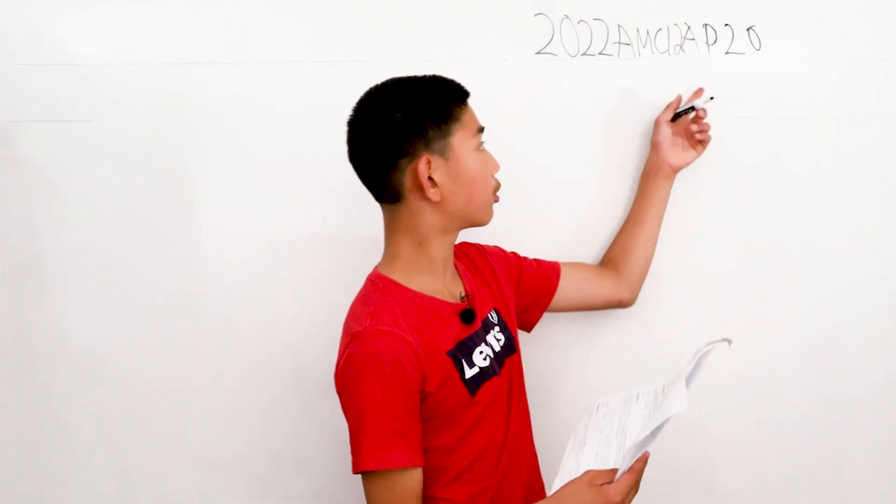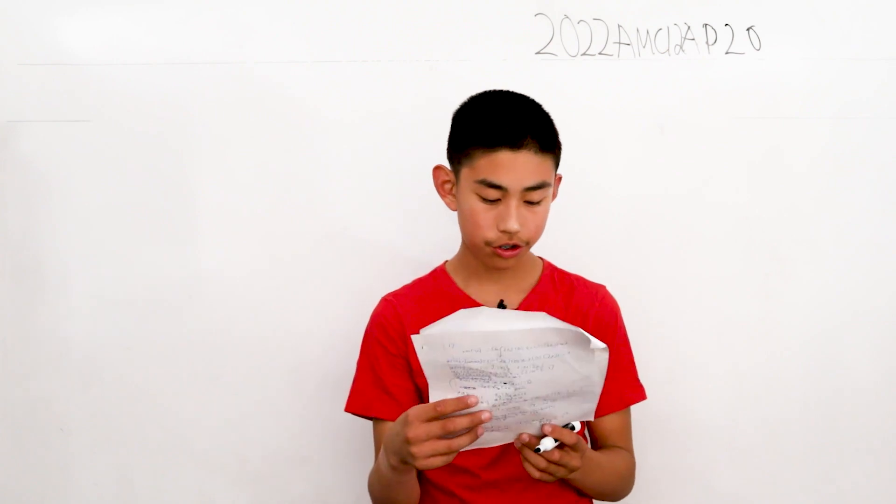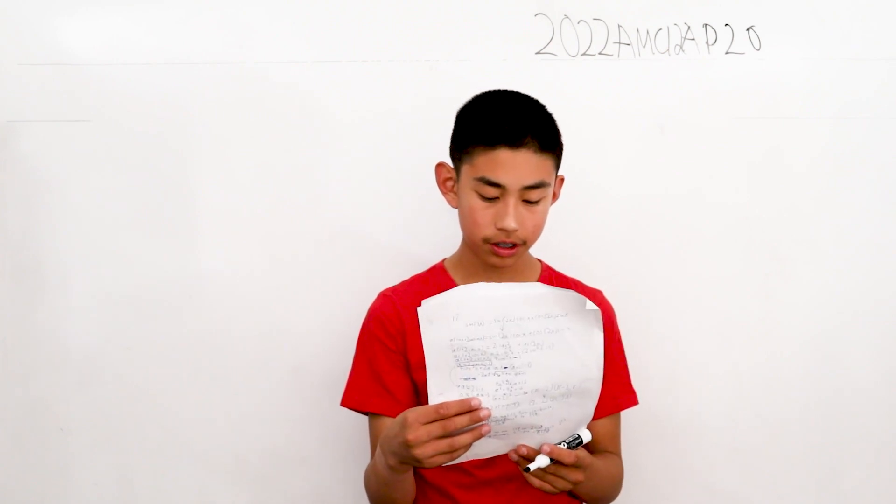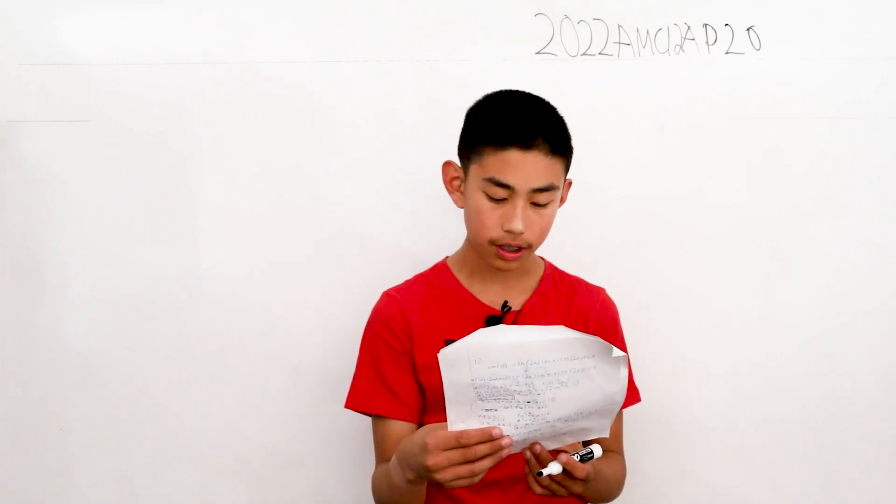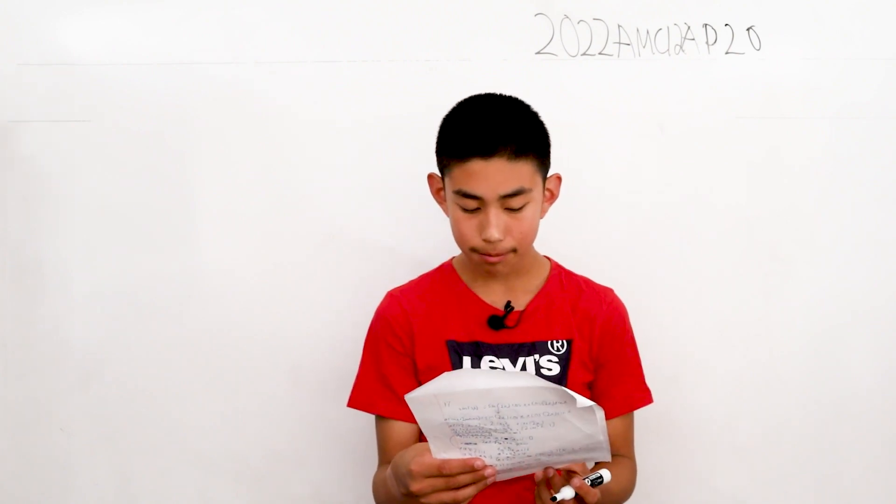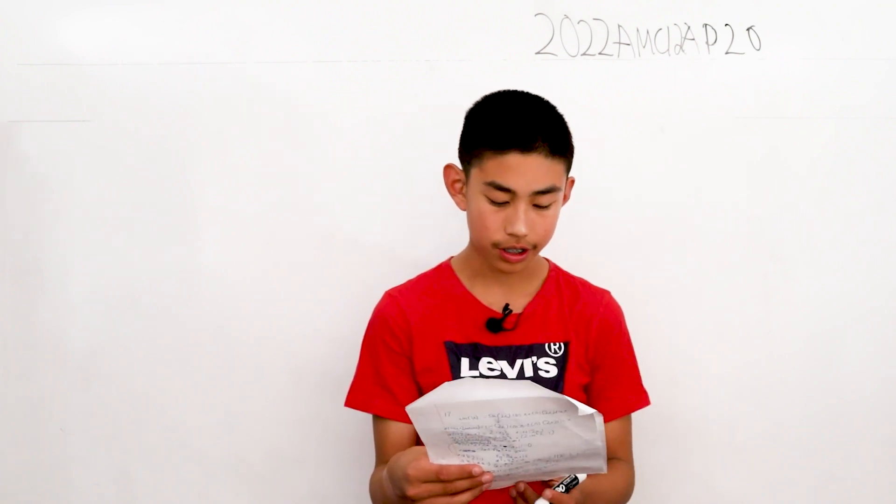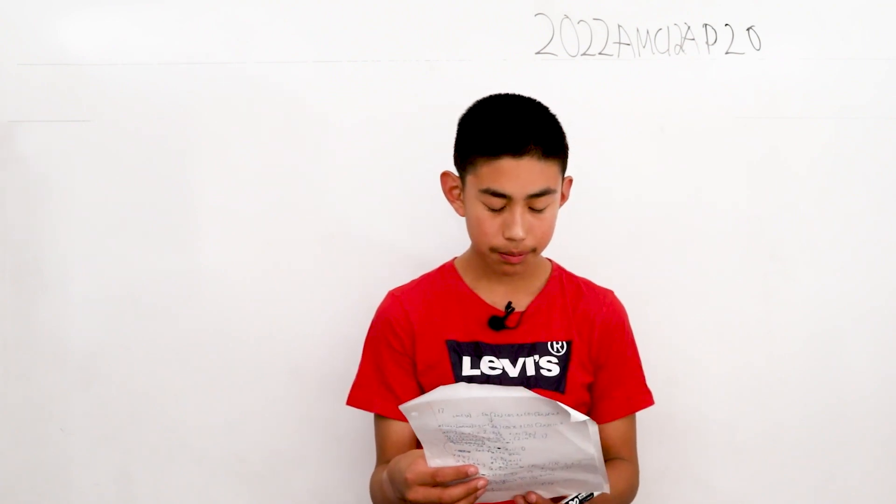We're solving problem 20 from the AMC 12F from 2022. Isosceles trapezoid ABCD has parallel sides AD and BC with BC less than AD and AB equals CD. There is a point P in the plane such that PA is 1, PB is 2, PC is 3, and PD is 4.